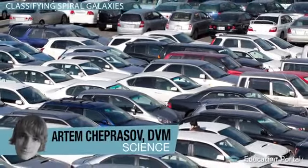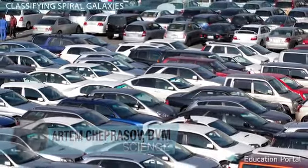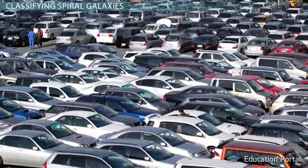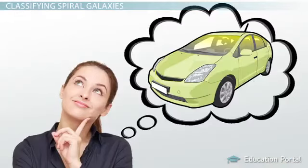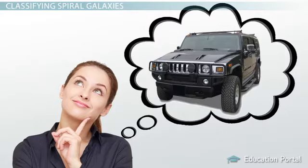Classification systems exist for just about everything you can think of, and things can be classified in more than one way. Take cars for example — they can be classified by year, make, model, and even custom features. When I say Porsche, you think of a small car with two doors that lies close to the ground. When I say Hummer, you can imagine a very big car with four doors that may need a step for some people to get into.